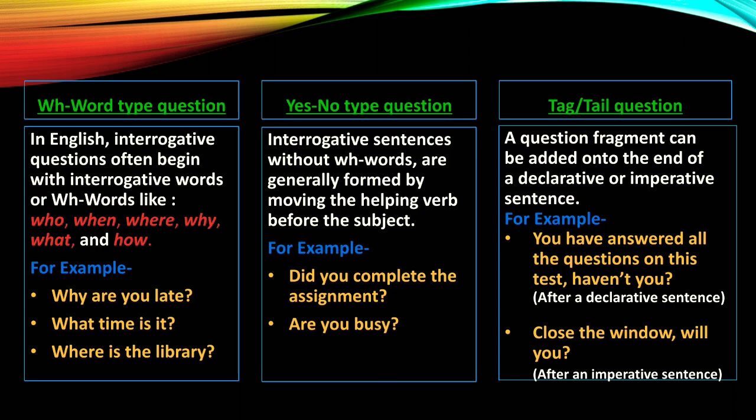WH-word type questions: In English, interrogative questions often begin with interrogative words or WH words like Who, When, Where, Why, What, How, etc. For example: 'Why are you late?' 'What time is it?' 'Where is the library?' When you hear any kind of WH-word type question, you need to answer something in words — whether it be a single word or more than one word, you need to answer something.